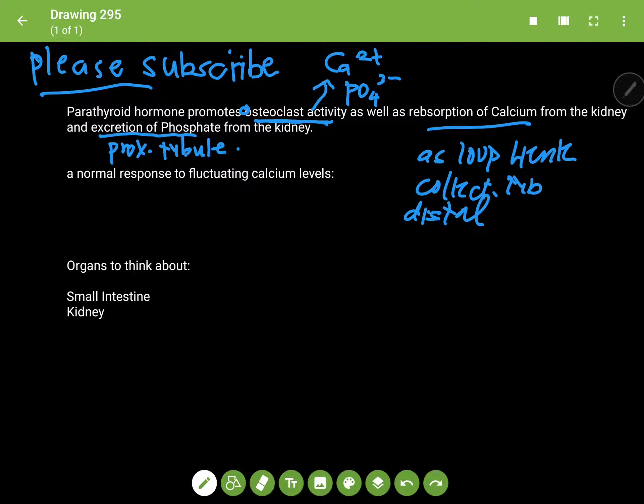In a normal response to fluctuating calcium levels, say you have a decrease in calcium, you should have a concomitant increase in PTH. It should cause an increase in parathyroid hormone. And also, if you have an increase in calcium, it should cause a decrease in parathyroid hormone. Organs that you should think about and keep in your head for now are the small intestine and kidney.